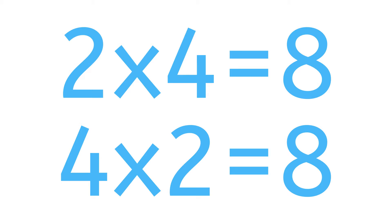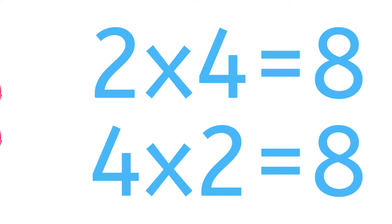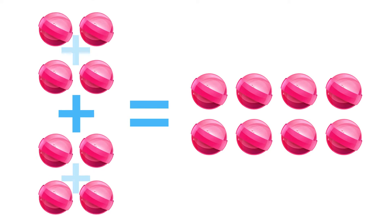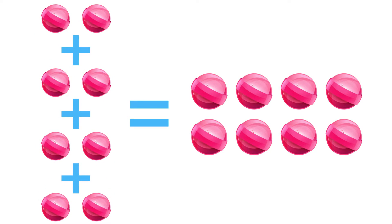Multiplication problems are the same regardless of the order of the numbers being multiplied. Here, you can see that 2 groups of 4 equals 8, and 4 groups of 2 also equals 8.